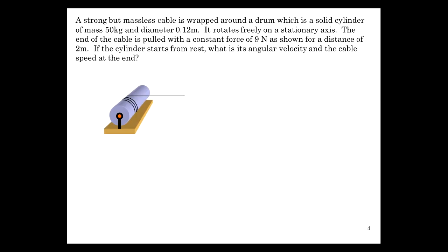Let's now consider... Oh, that's awful. Hope you're awake. A strong mass is cable wrapped around a drum. That's a solid cylinder, mass 50 kilograms, diameter 0.12 meters. Rotates freely on a stationary axis. So that's this axis here. It's got a bearing that goes through the center, and it's of no friction. The end of the cable is pulled with a constant force of 9 newtons for 2 meters. The cylinder is going to start from rest. We're going to figure out the angular velocity at the end of that 2 meters and the speed of the cable.